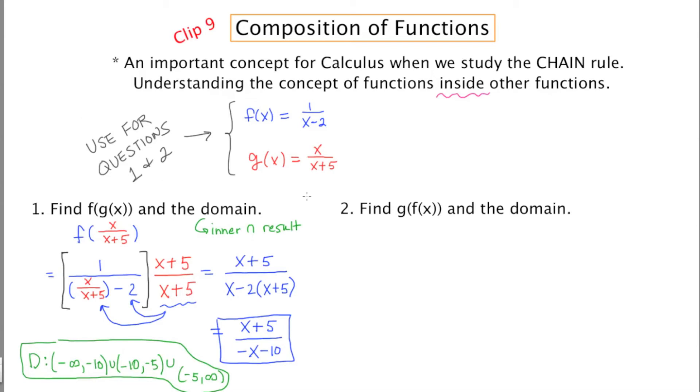So now I'm doing g of f of x, so to use my color again, I'm going to use g of, now this time the inner function is f of x, and f of x is blue, and it's 1 over x minus 2. So that's what I'm going to write on the inside, 1 over x minus 2.